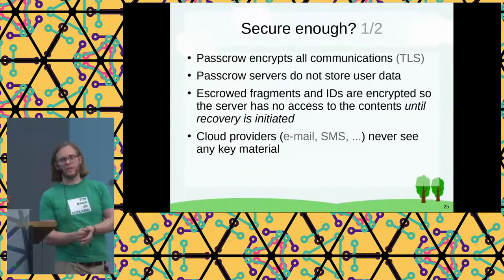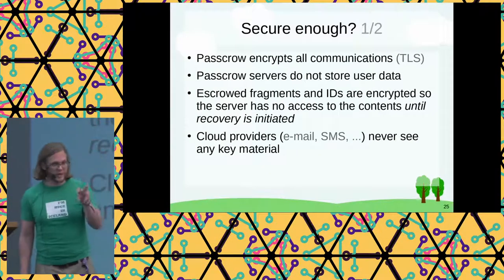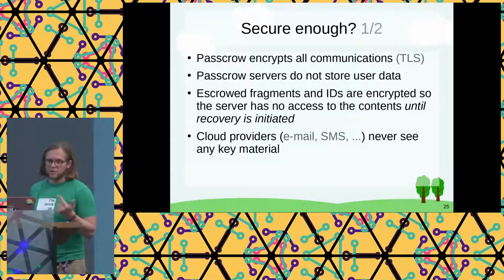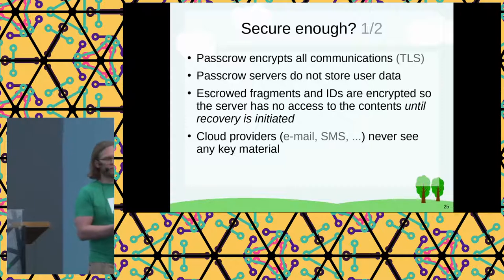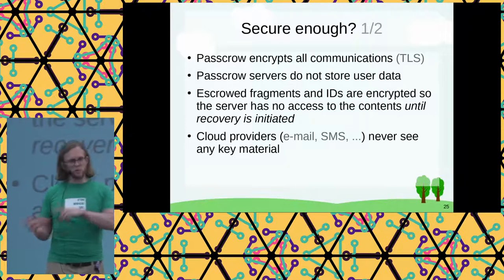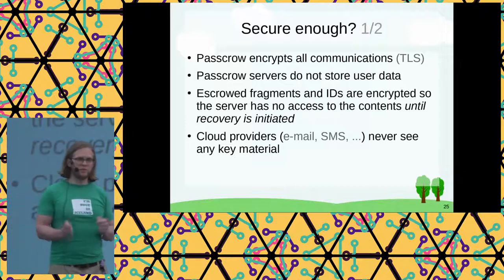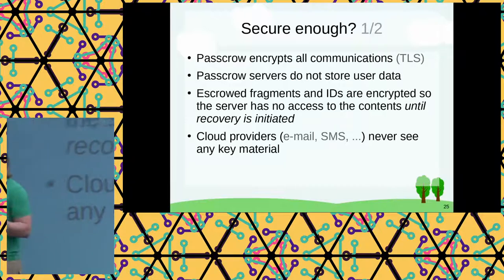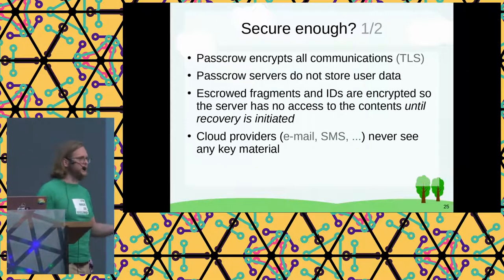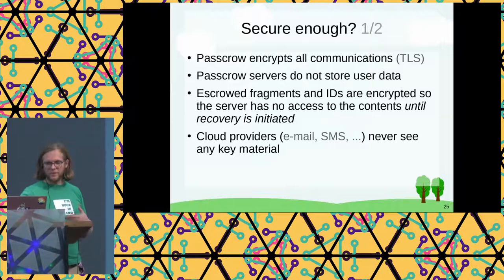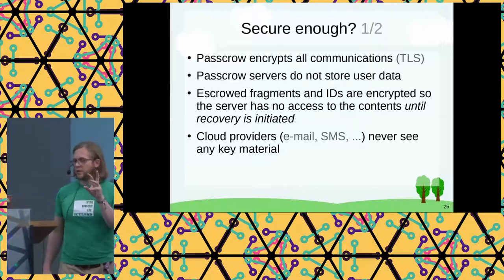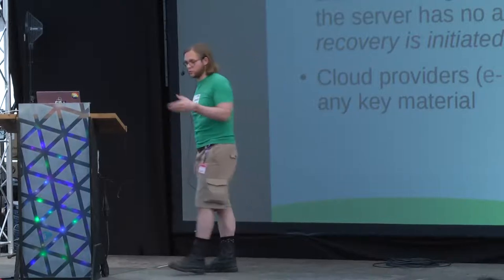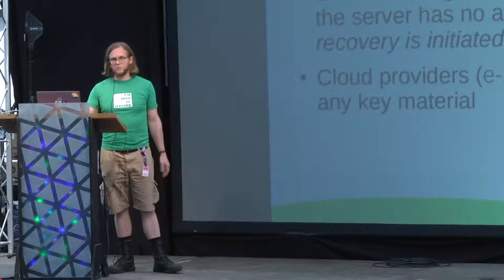The PassCrow servers don't have your data. All they have is an encrypted blob, which they cannot read. Inside that encrypted blob is your identity and a fragment of the recovery key — not the whole thing. When you initiate recovery, PassCrow goes back to the recovery pack stored locally, finds the key generated to encrypt the thing the server has, and says: here server, now you're allowed to decrypt your instructions. It opens the recovery envelope, finds the identity, and sends you a code or asks you to visit a website and log in. This means these providers — email providers, Twilio — they never see any key material at all.